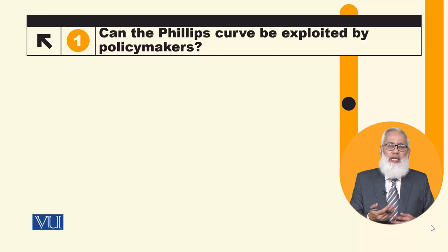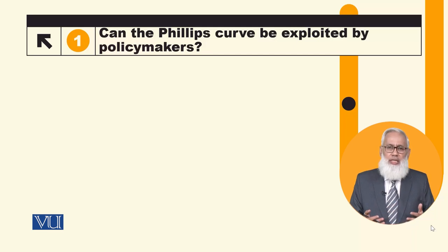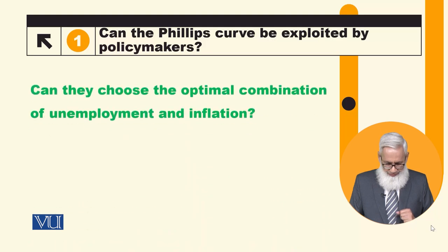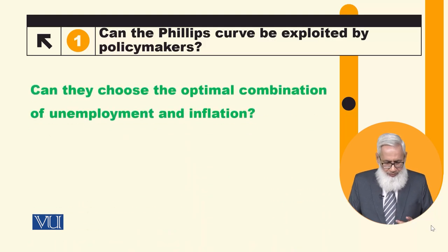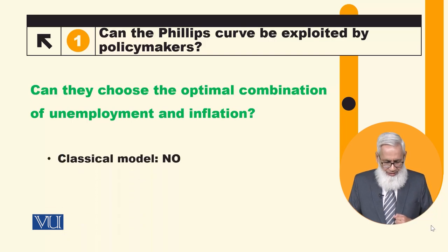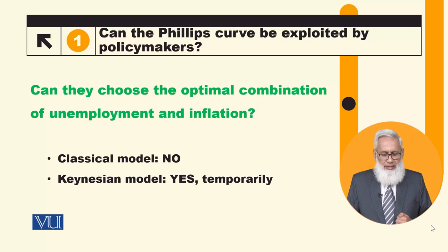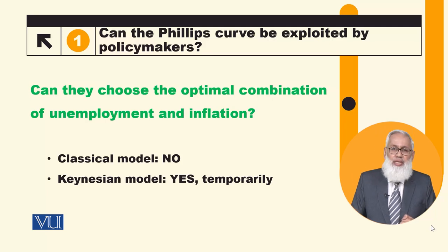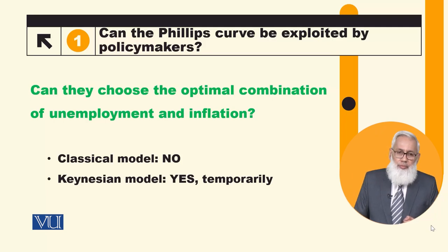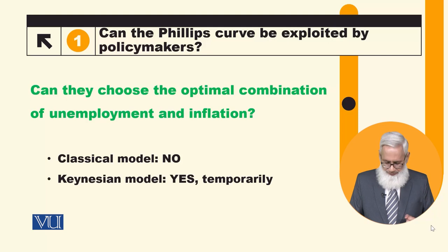We can accept inflation, and in that regard we can reduce our unemployment — or not. Can policymakers choose the optimal combination of unemployment and inflation? This is classical economics saying no, this is not possible, whereas Keynesian says yes, it is possible, at least in the short run.